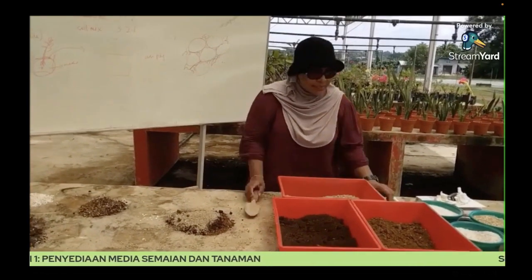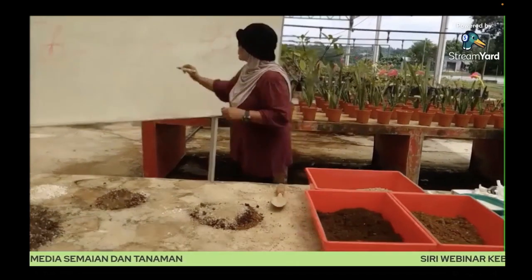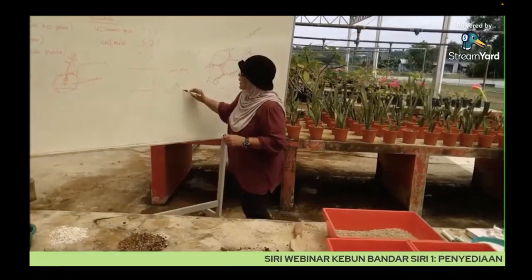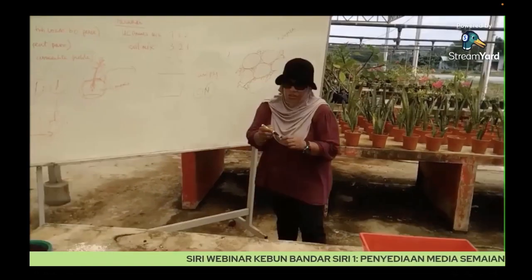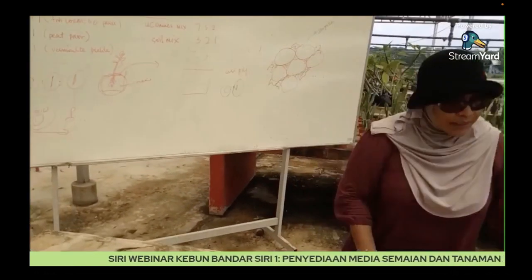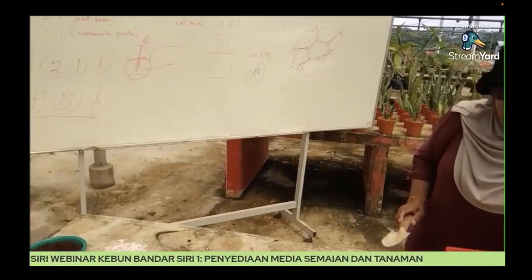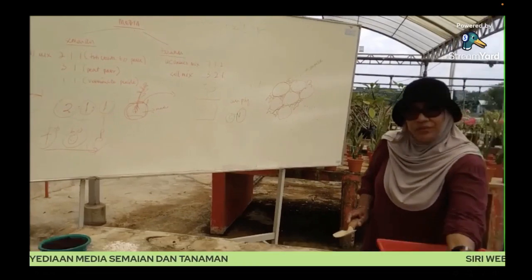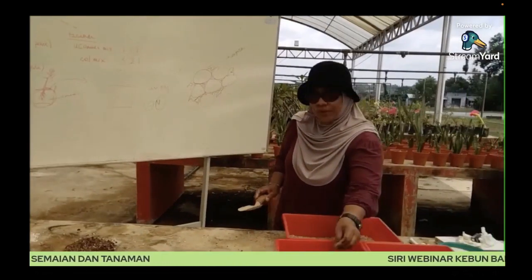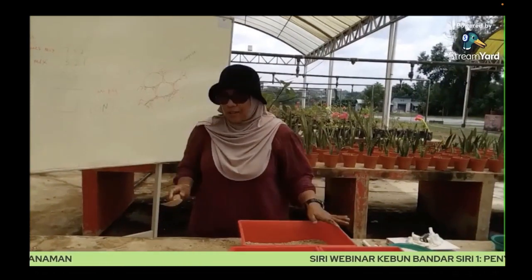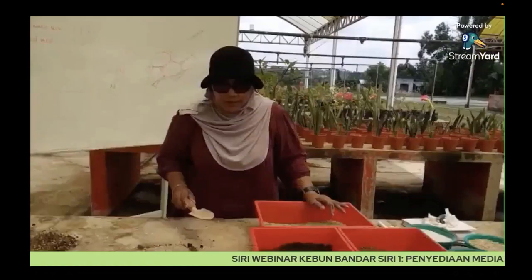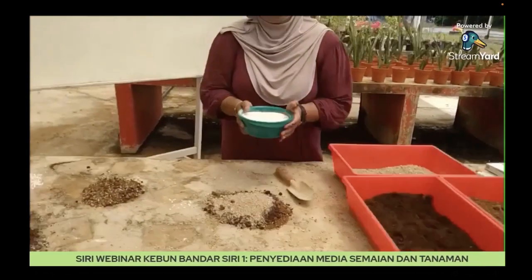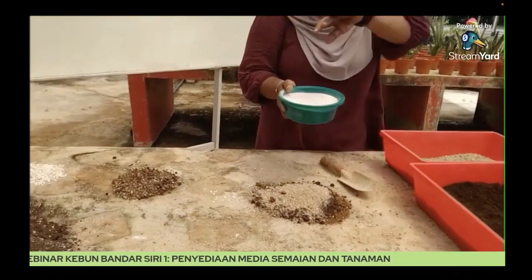Kalau bahan itu tinggi C:N ratio, contohnya yang ini, dia akan cepat mereput, lebih bagus untuk akar. So dekat sini kita akan campurkan sedikit dolomite. This is magnesium limestone, dia ada kalsium dan juga ada magnesium. Some people sebut dia ni adalah baja — betul, dia baja sebab dolomite yang mengandung kalsium and magnesium.